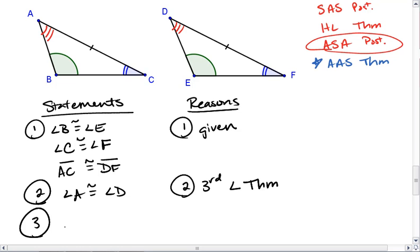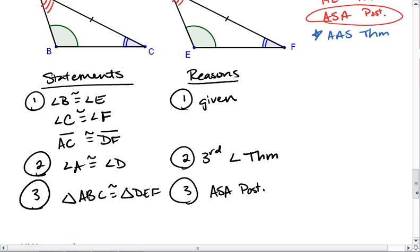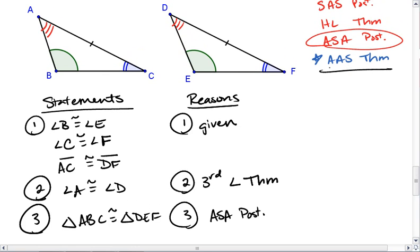Which means now I know that triangle ABC is congruent to triangle DEF. That is by angle, side, angle postulate. Which means we have officially proven the angle, angle, side theorem.